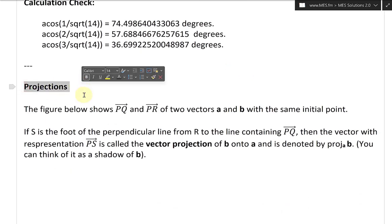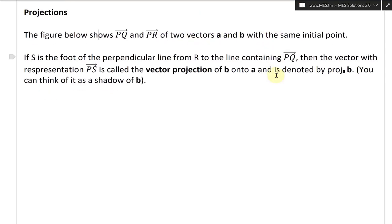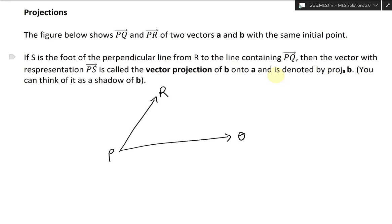Let's take a look at projections. The figure below shows PQ and PR of two vectors A and B with the same initial point. We have two line segments starting at P — one goes to Q giving us PQ, and the other goes to R giving us PR. This is vector A and this is vector B.